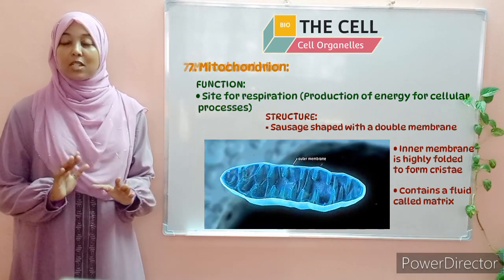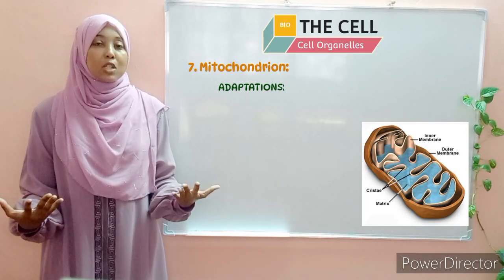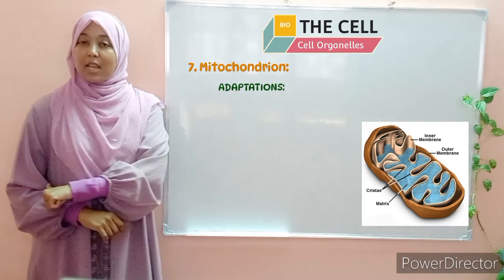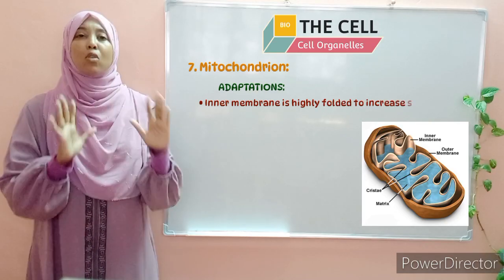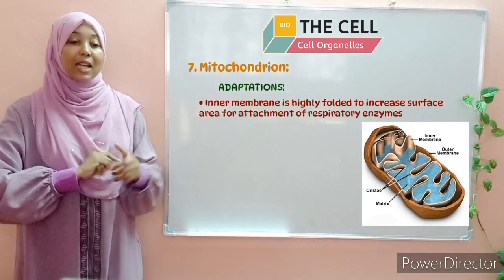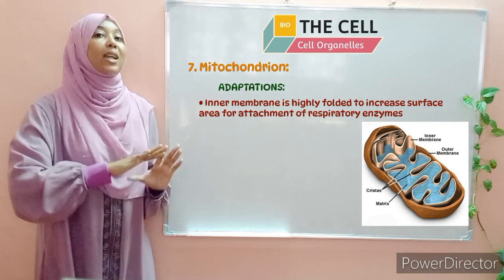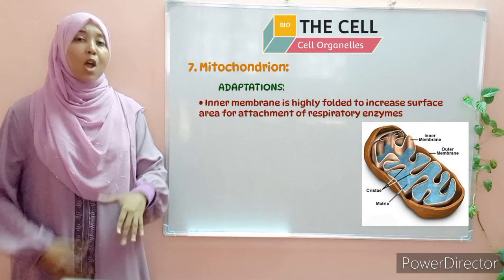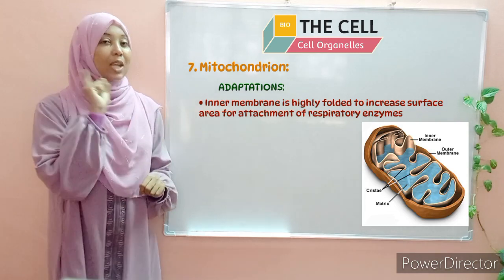Let's move on to the adaptations — this is a very common exam question. Adaptation number one concerns the cristae. The inner membrane is highly folded to form cristae. Note: don't say that the mitochondrion is folded — it is only the inner membrane that is highly folded to form cristae. The function of the cristae is to increase the surface area. Also note: don't say the cristae provide a surface area; even without the cristae you still have a surface area. What the cristae do is increase the surface area for the attachment of enzymes.